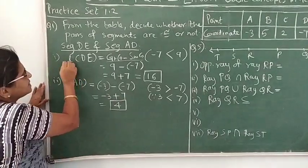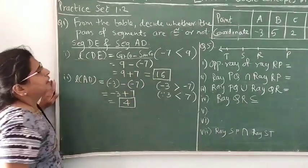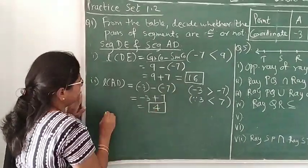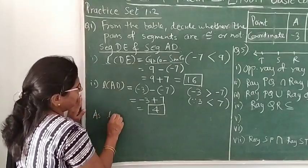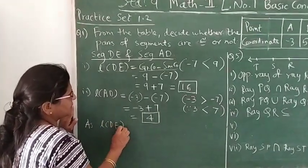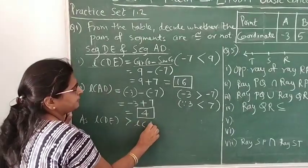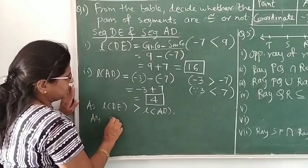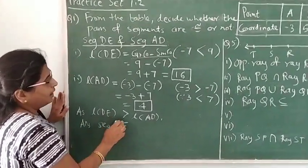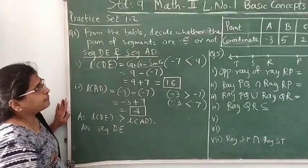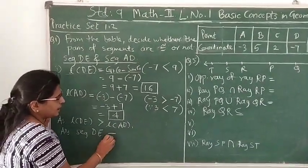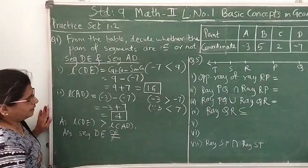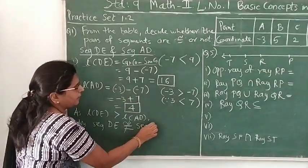Let's compare these two distances. 16 is bigger than 4, so we can say length DE is greater than length AD. What is our answer? Our answer is segment DE. Are they congruent? They are not congruent. So we will put the congruent sign with a slash over it. They are not congruent to segment AD.